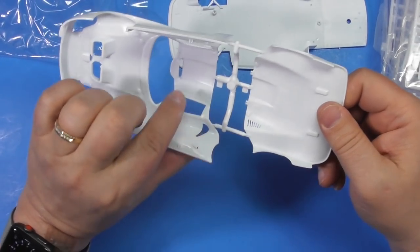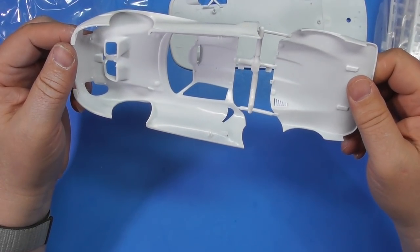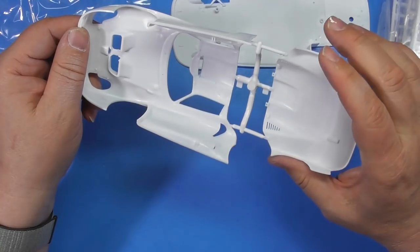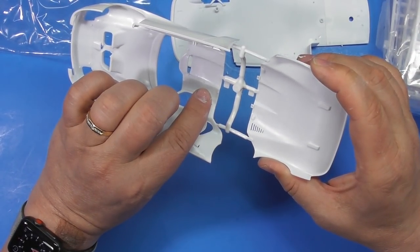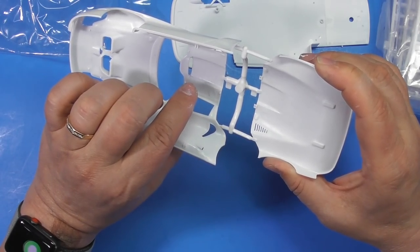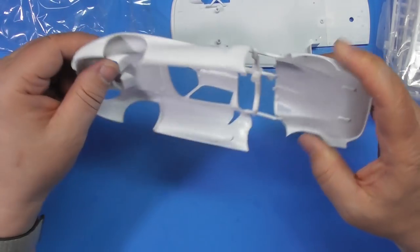Ejector pin marks here, here, here, here. So these, if you're going to open the back panel, have to be cleaned up. These are going to depend on how much can be seen through the roof.